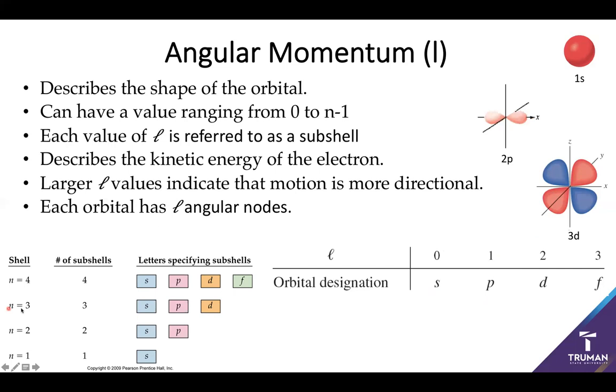If n equals three, I can have three separate subshells: s, p, or d, where d means that l equals two.